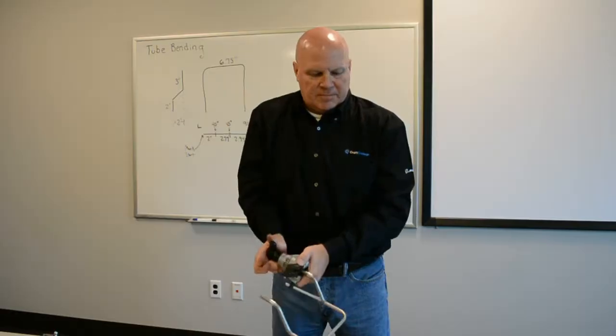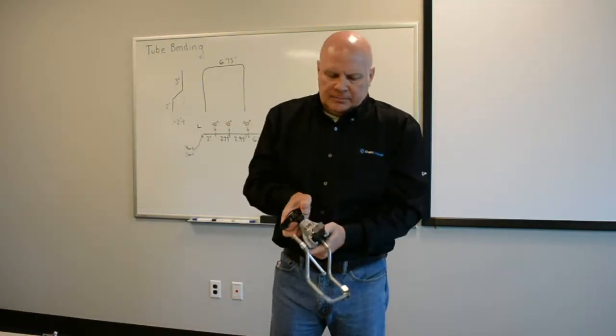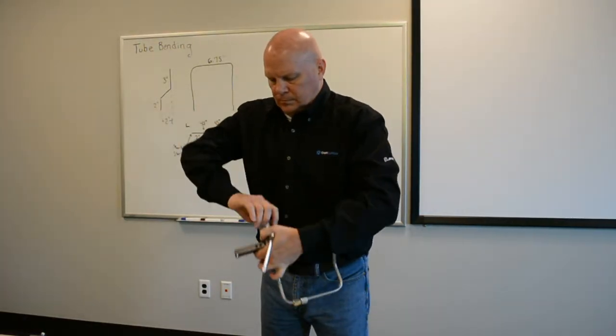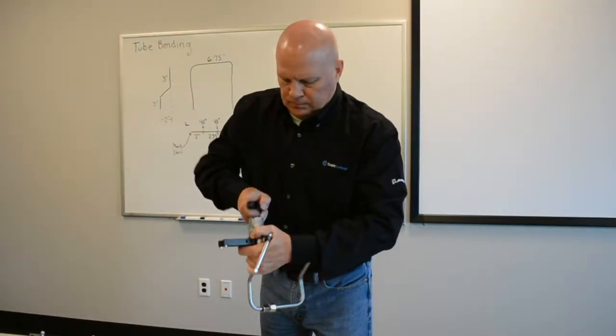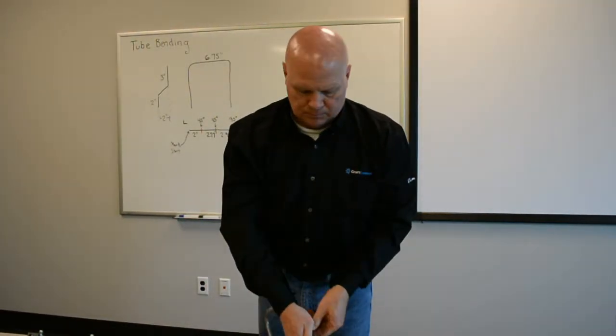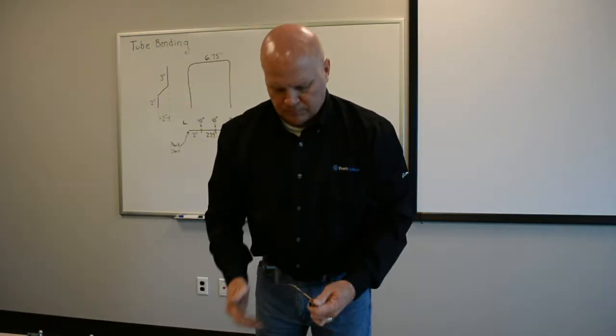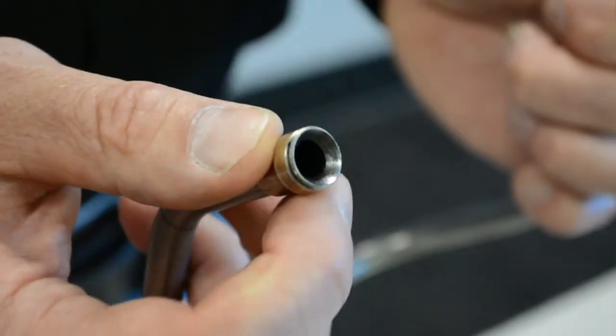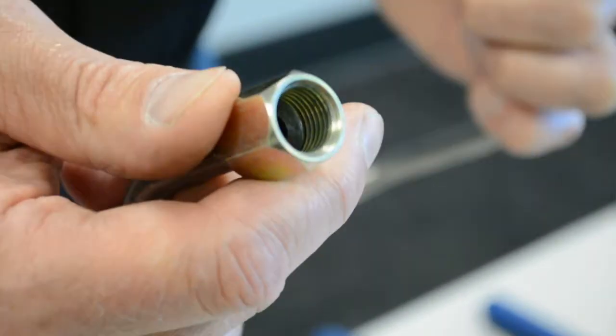37-degree flare, hydraulic applications. Keep turning until it breaks. See it broke? It spins freely now. Back it out. That's what I went into. So now there's my completed 37 degree flare. My ferrule sits up against it and I'll make contact for the whole flare and my nut will also fit up over the ferrule and the flare.